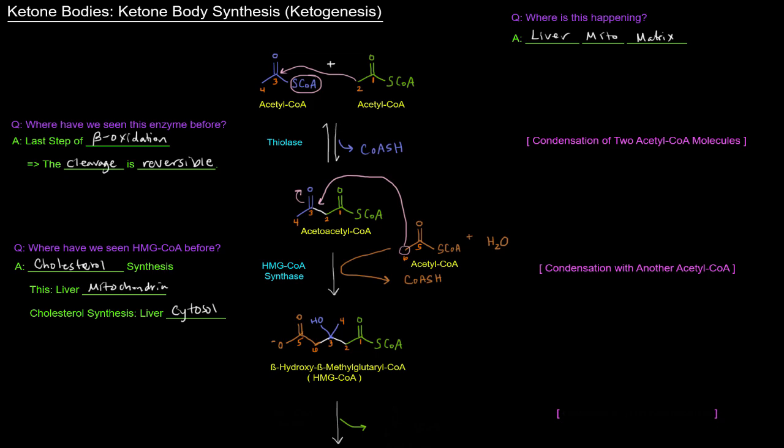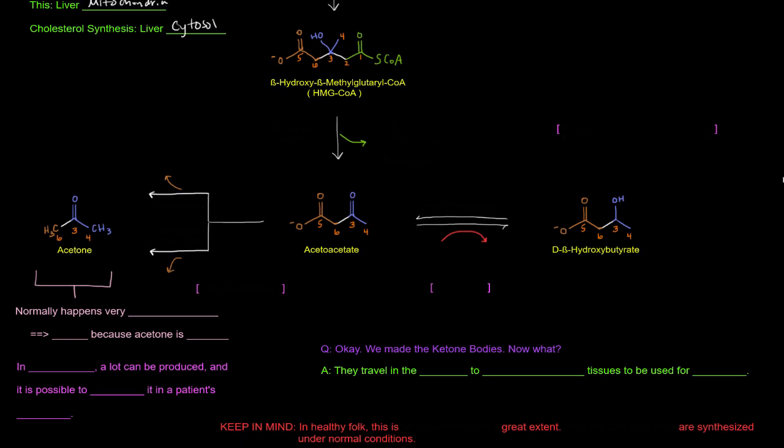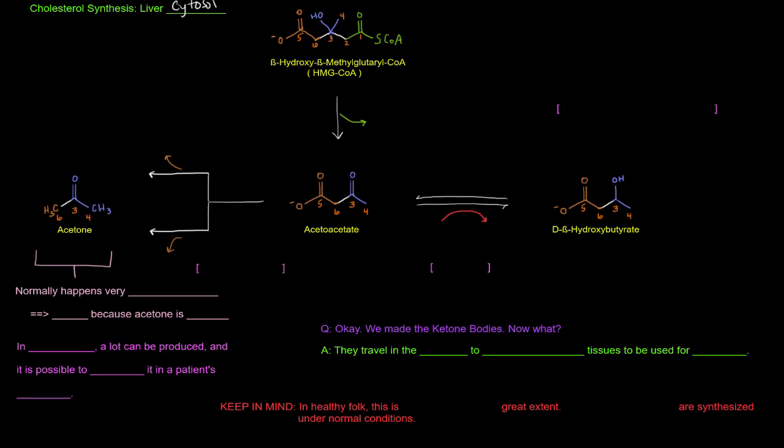Next up, we're going to take HMG-CoA. And we are going to turn it into acetoacetate, which is our actual ketone body. This is an actual ketone body here. What happened? Well, we basically lost this part of the molecule here. We're going to lose an acetyl-CoA here. We're going to lose an acetyl-CoA. Those are one and two carbons. And we're left with acetoacetate.